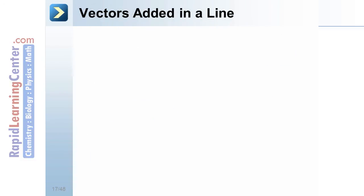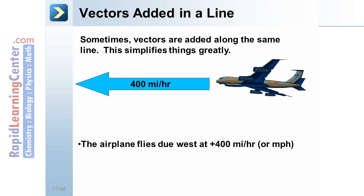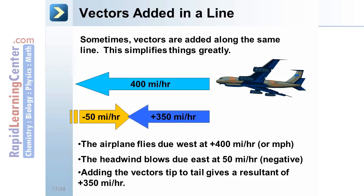Vectors added in a line. Sometimes vectors are added along the same line. This simplifies things greatly. As an example, an airplane flies due west at 400 miles per hour, plus 400 miles an hour. A headwind blows due east, the opposite direction, at 50 miles per hour. We'll consider this negative. Adding these vectors tip to tail gives a resultant of plus 350 miles per hour. This is our resultant.